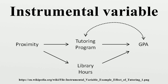Angrist and Krueger present a survey of the history and uses of instrumental variable techniques. Since U is unobserved, the requirement that Z be independent of U cannot be inferred from data and must instead be determined from the model structure, i.e., the data-generating process. Causal graphs are a representation of this structure, and the graphical definition given above can be used to quickly determine whether a variable Z qualifies as an instrumental variable given the set of covariates W.